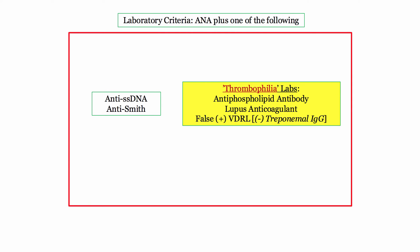Here are the other labs. If any one of them is positive, it counts as the 11th and final diagnostic criterion. While there is little action on single-stranded DNA and anti-Smith, the thrombophilia-related labs get quite a bit of action on the boards. If a lupus patient presents positive for any of these three, they have a 50% risk of forming a blood clot.